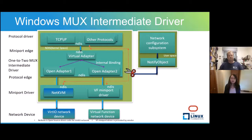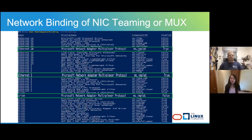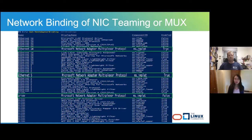This snapshot shows the binding details of NIC Teaming and the MUX driver — they show similar bindings. Ethernet 4 and Ethernet 5 are the VF and virtual network adapter connections. They only bind to the network adapter multiplexer protocol. The SR-IOV network connection generated by the NIC teaming or MUX driver model binds to all necessary upper-layer protocols but does not bind to its own protocol driver.